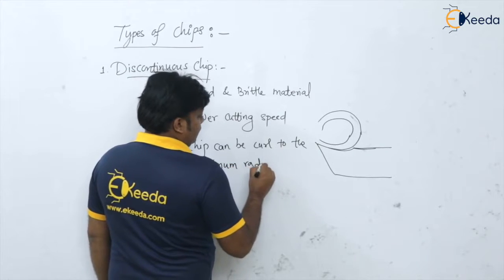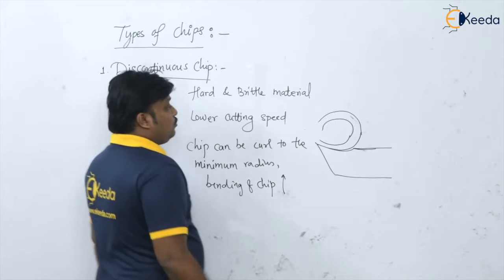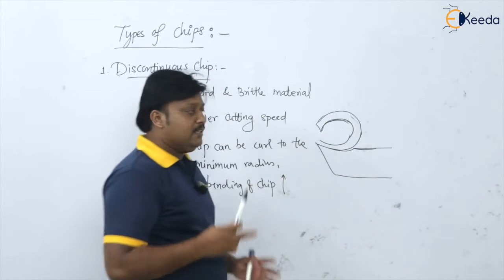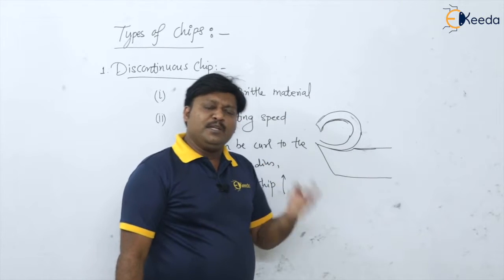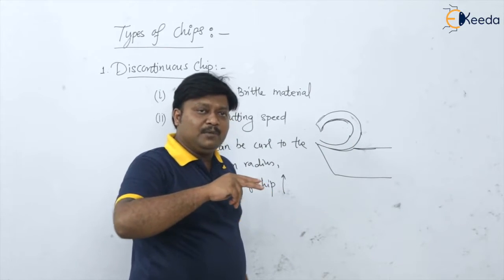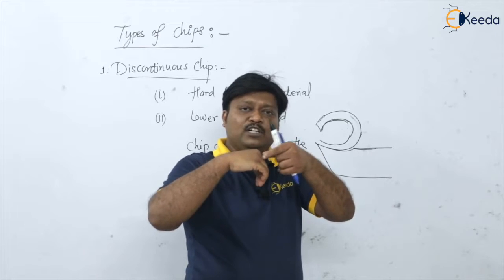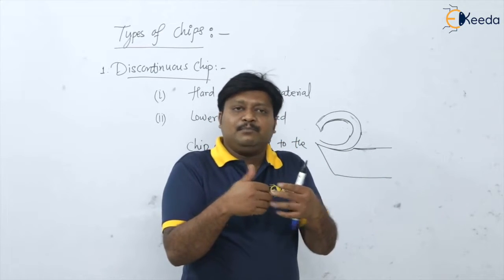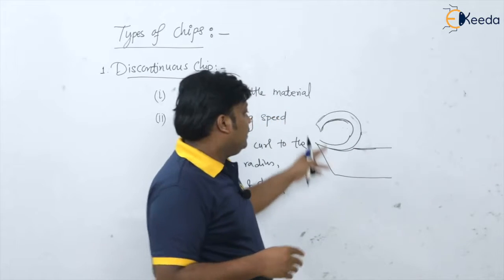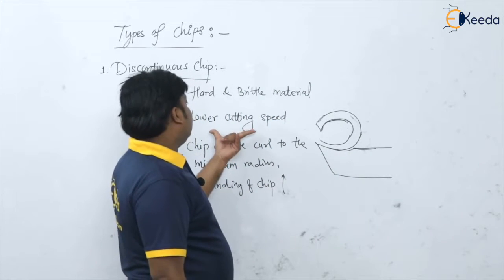Minimum radius means what? Bending of the chip is very high — bending of chip is maximum. When the curling radius is minimum, the bending will be maximum. We know that the chip produced is not a continuous one; it is having so many voids and so many cracks which are present inside that chip. When we are curling this chip to the minimum radius, the bending is maximum, and the present voids or cracks are propagating easily. The chip becomes discontinuous because of that enlargement of the cracks or voids propagating.